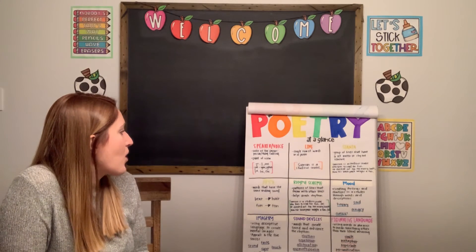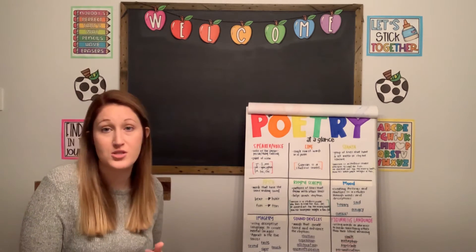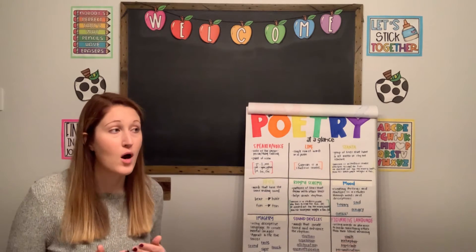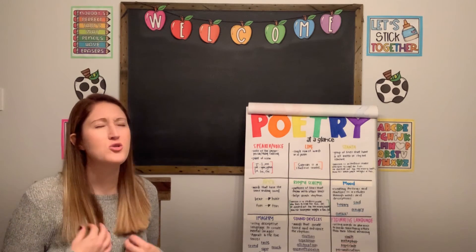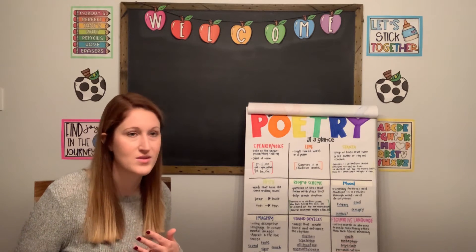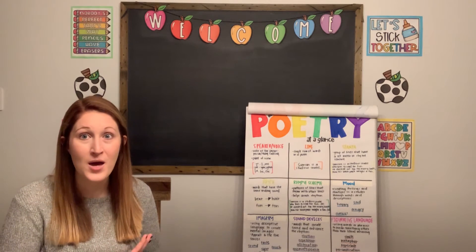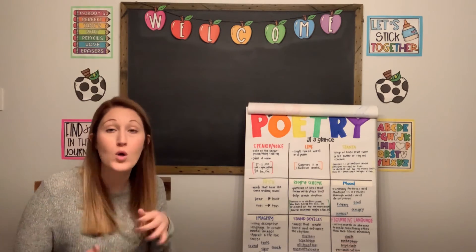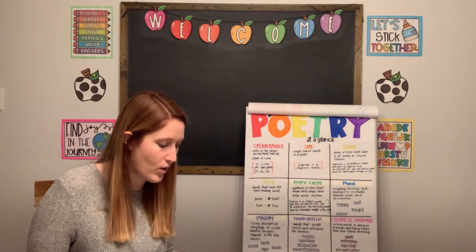Another thing we think about with poems is mood. Mood is when we create feelings and emotions in a reader through the words and descriptions. Mood is really important because poems were written for a reason — oftentimes they were written to help you feel something. Songs are written for a reason too. We want you to feel happy, sad, excited, or nervous. The words we choose help to create mood. Let's see if we can identify the mood of one of these poems.